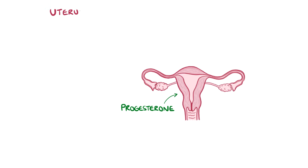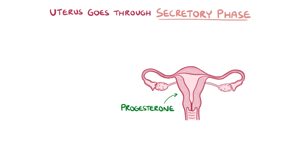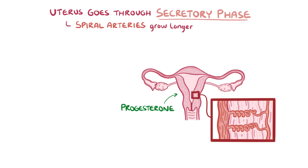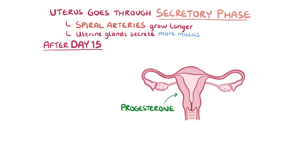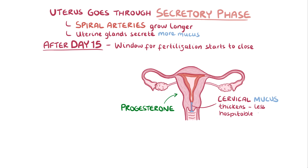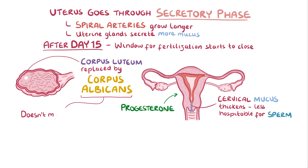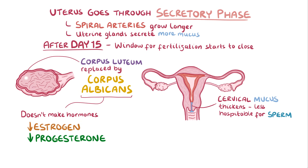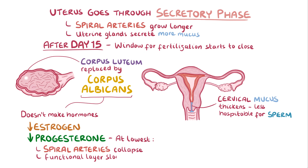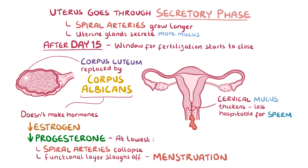Under the influence of progesterone, the uterus enters the secretory phase of the endometrial cycle. During this time, spiral arteries grow the most and become coiled, and uterine glands begin to secrete more mucus. After day 15, the optimal window for fertilization begins to close, and cervical mucus starts to thicken and becomes less hospitable to sperm. Over time, the corpus luteum gradually degenerates into the nonfunctional corpus albicans, which doesn't make hormones, so estrogen and progesterone levels slowly decrease. When progesterone reaches its lowest level, the spiral arteries collapse, the functional endometrium sheds through menstruation, marking the beginning of a new cycle.